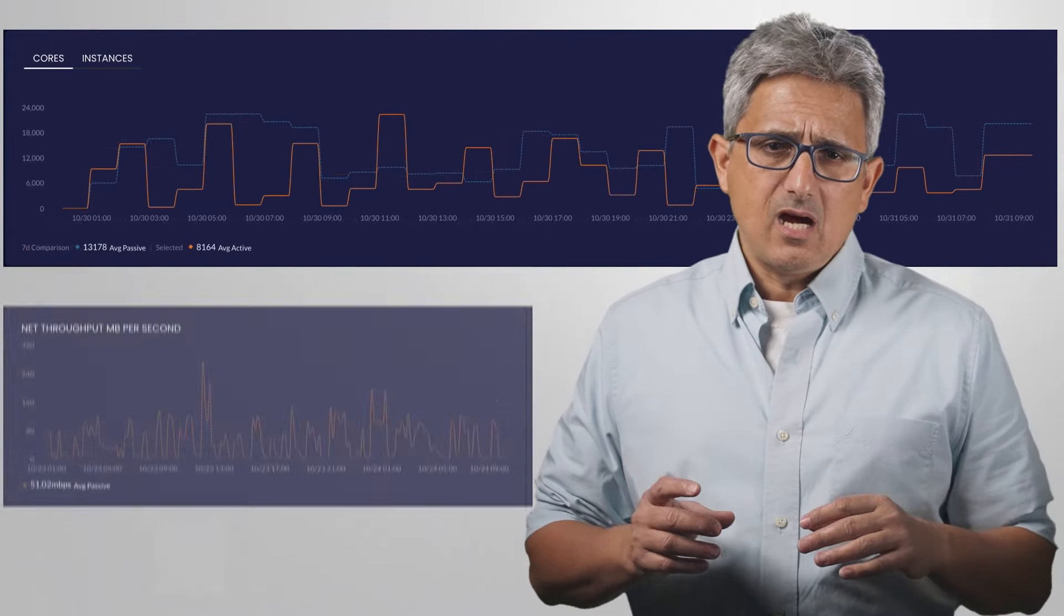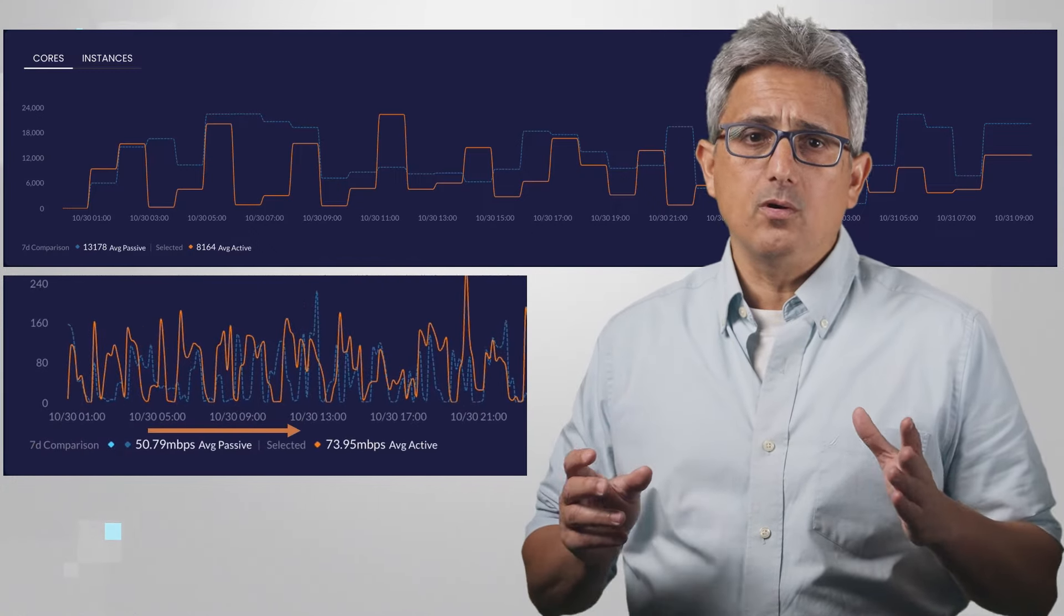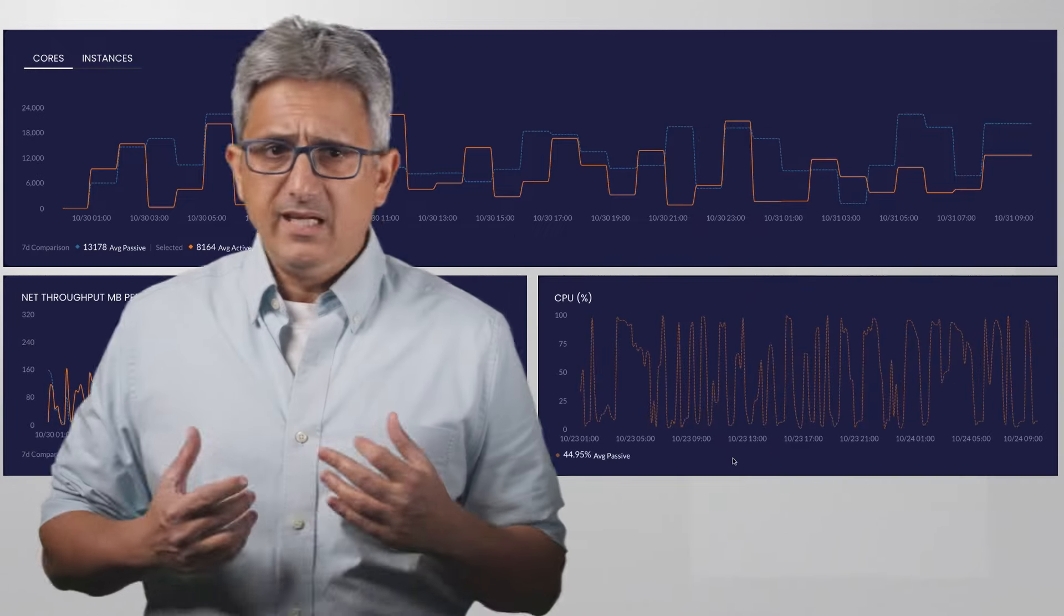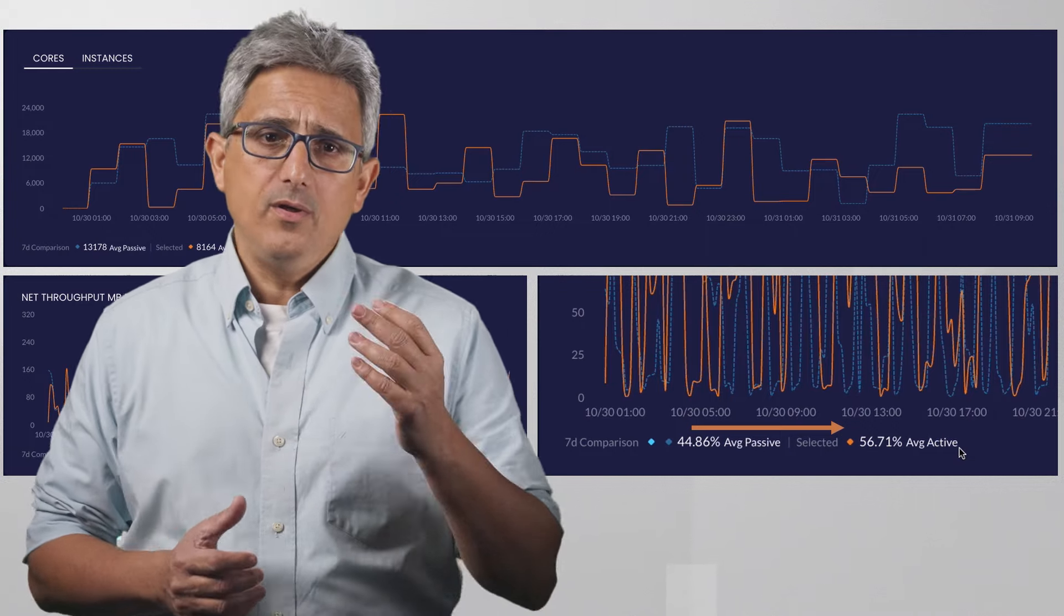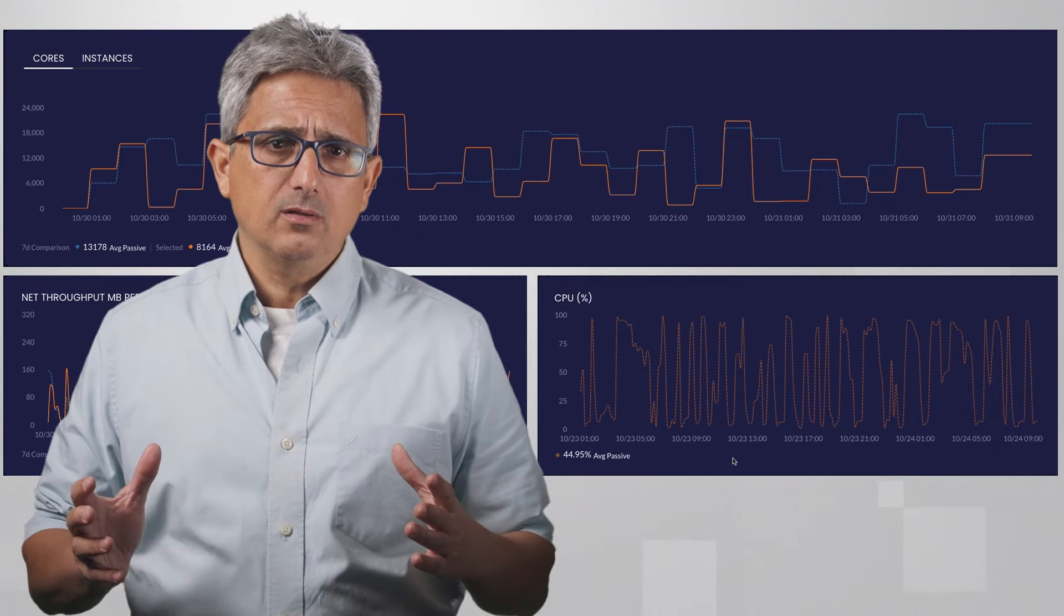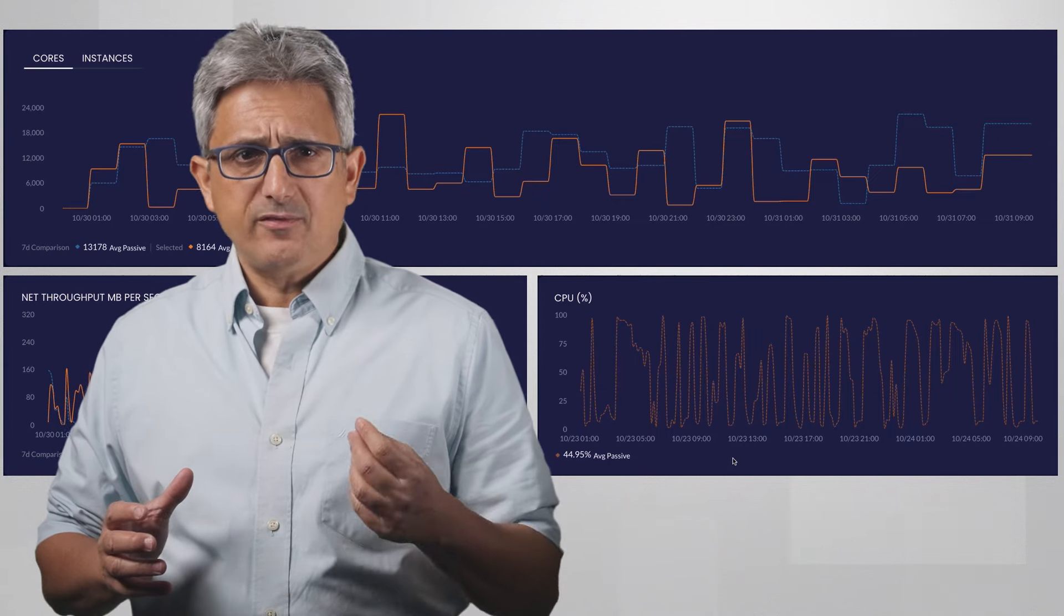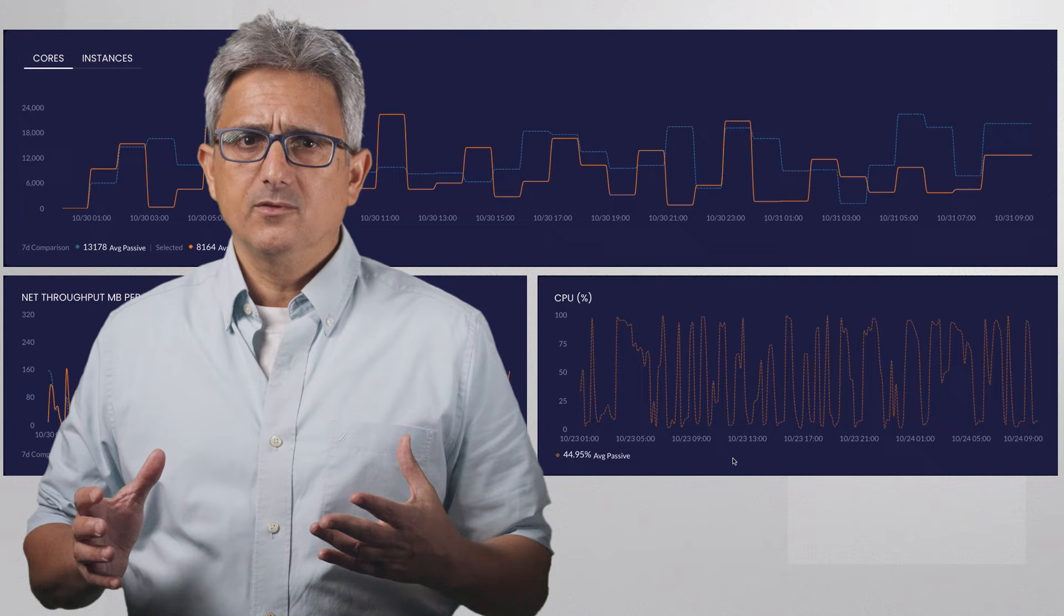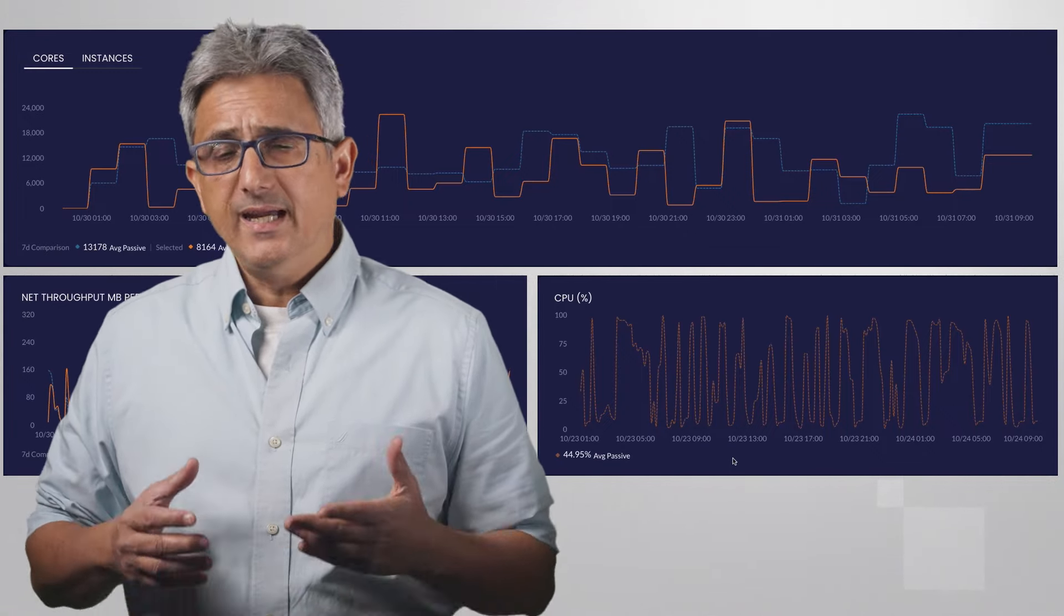You can see how the throughput increased from 51 to 74 megabits per second and how the average utilization of each core increased from 45 to 56% with Granulate. So each node is doing more work, tasks are better packed and better scheduled, and this 35% core count reduction could be translated directly to less cores required for this workload and to cost savings.